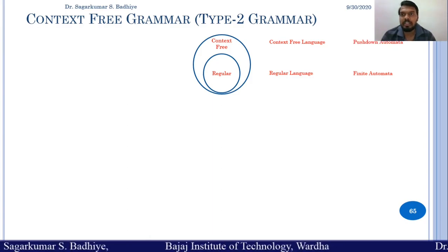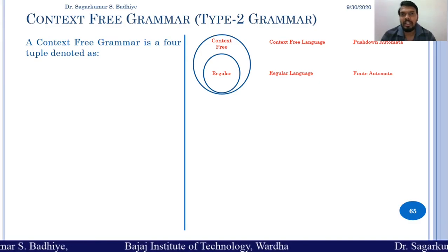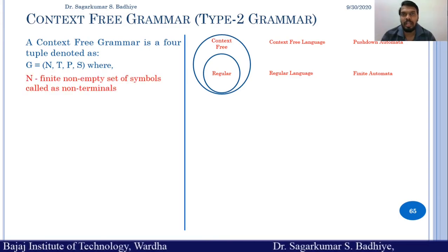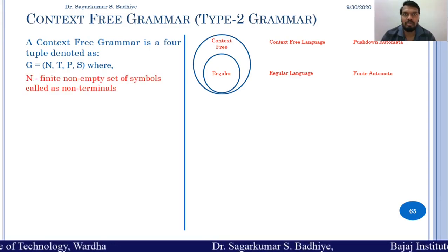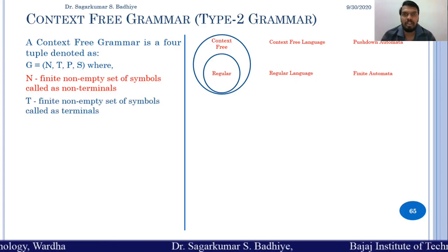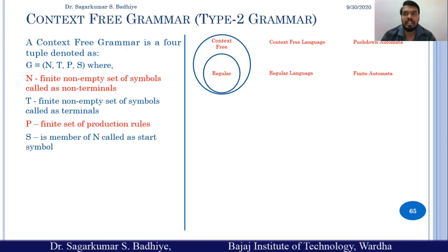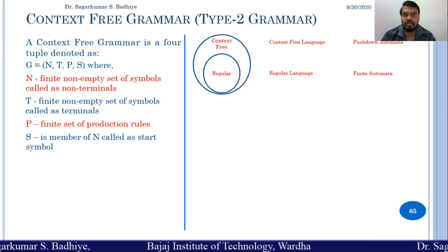A context free grammar is a four-tuple denoted as G = (N, T, P, S), where N is a finite non-empty set of symbols called non-terminals, T is a finite non-empty set of symbols called terminals, P is a finite set of production rules, and S is a member of N called the start symbol.